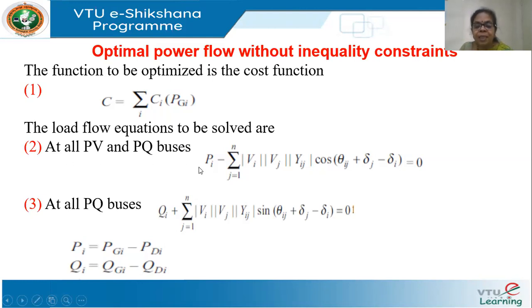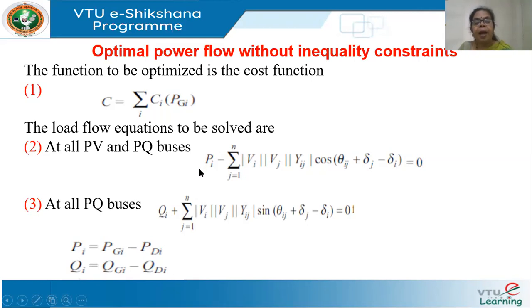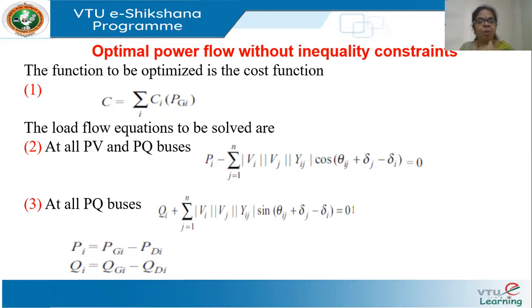The load flow equations to be solved — at all PV and PQ buses, this equation must be satisfied. The injected power PI is calculated from the given values of generation and demand: PI = PGi minus PDi. Similarly, the injected reactive power is QGi minus QDi. PI is calculated from data, and the other term is what I get as an estimate. PI minus this term should equal zero, and since P is specified at all PQ and PV buses, this must be satisfied at all buses except the slack bus.